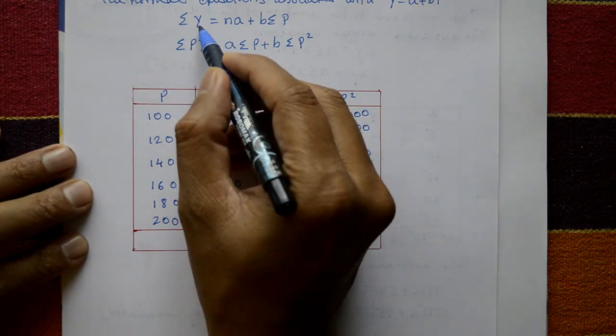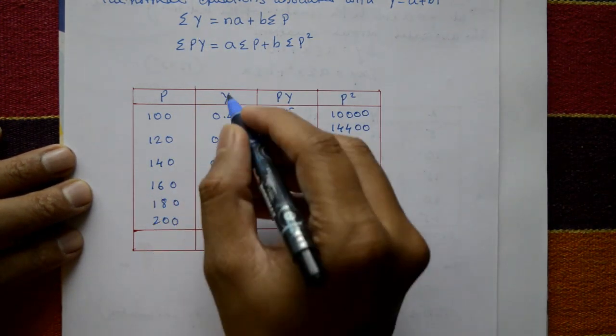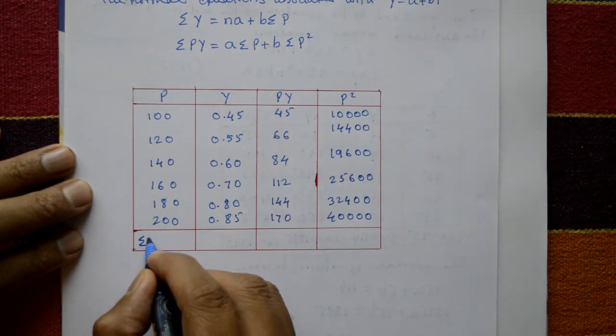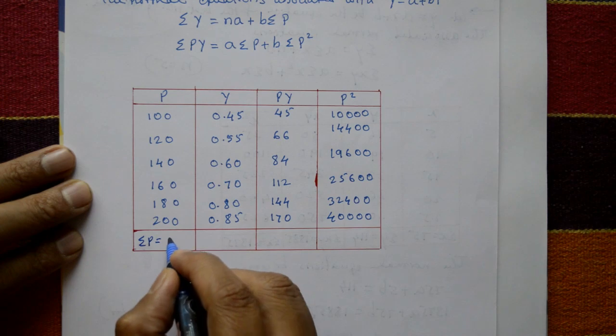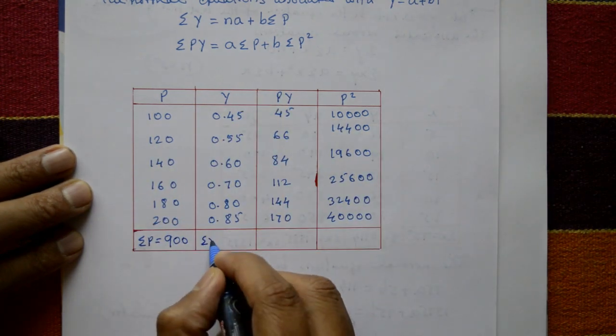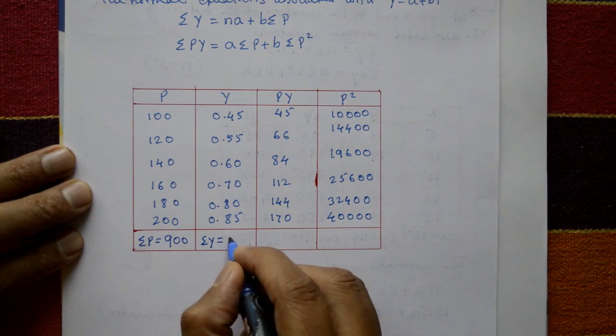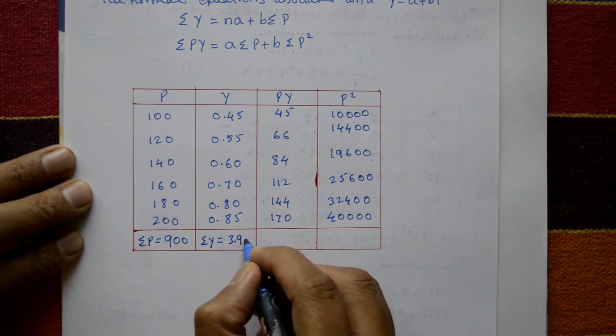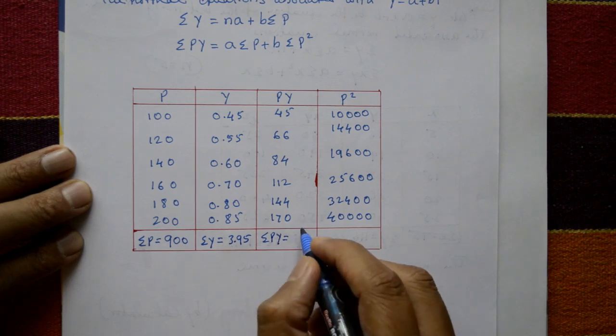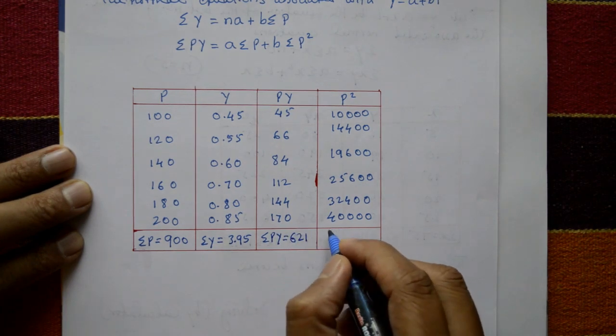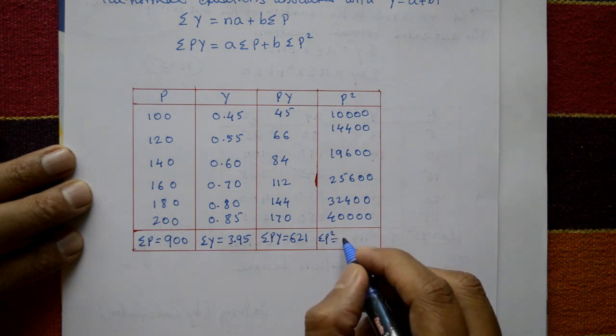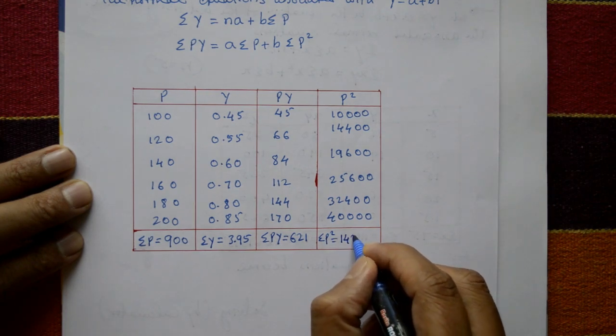Now take summation Y, summation P, summation PY, and summation P square. Summation P is equal to 900. Summation Y is equal to 3.95. Summation PY is equal to 621. Summation P square is equal to 142,000.